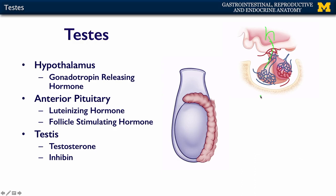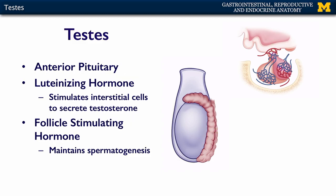Gonadotropin releasing hormone travels from the hypothalamus to the anterior pituitary. Then luteinizing hormone and follicle stimulating hormone are secreted from the anterior pituitary and act on the testes. The testes then secrete testosterone and inhibin.